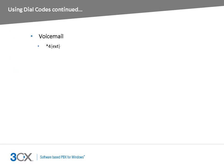You can use the star 4 dial code to leave a message directly in an extension's voicemail box. To do this, dial star 4 and the extension number. For example, dialing star 4 100 will leave a voicemail message in the voicemail box of extension 100.